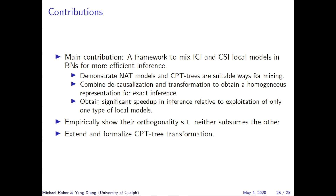In summary, our main contribution is a framework to mix ICI and CSI local models in Bayesian networks for more efficient inference. We demonstrate that NAT models and CPT trees are suitable ways for mixing, and we combine decausalization and transformation to obtain a homogeneous representation for exact inference. We obtain a significant speed-up of two orders of magnitude in inference relative to exploiting only one type of local model. We empirically show their orthogonality such that neither model subsumes the other, and we also extend and formalize the CPT tree transformation algorithm. Thank you.